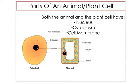Animal and plant cells share some of the same organelles: nucleus, cytoplasm, and cell membrane. Pause the video and copy the information on the slide, including the diagrams.